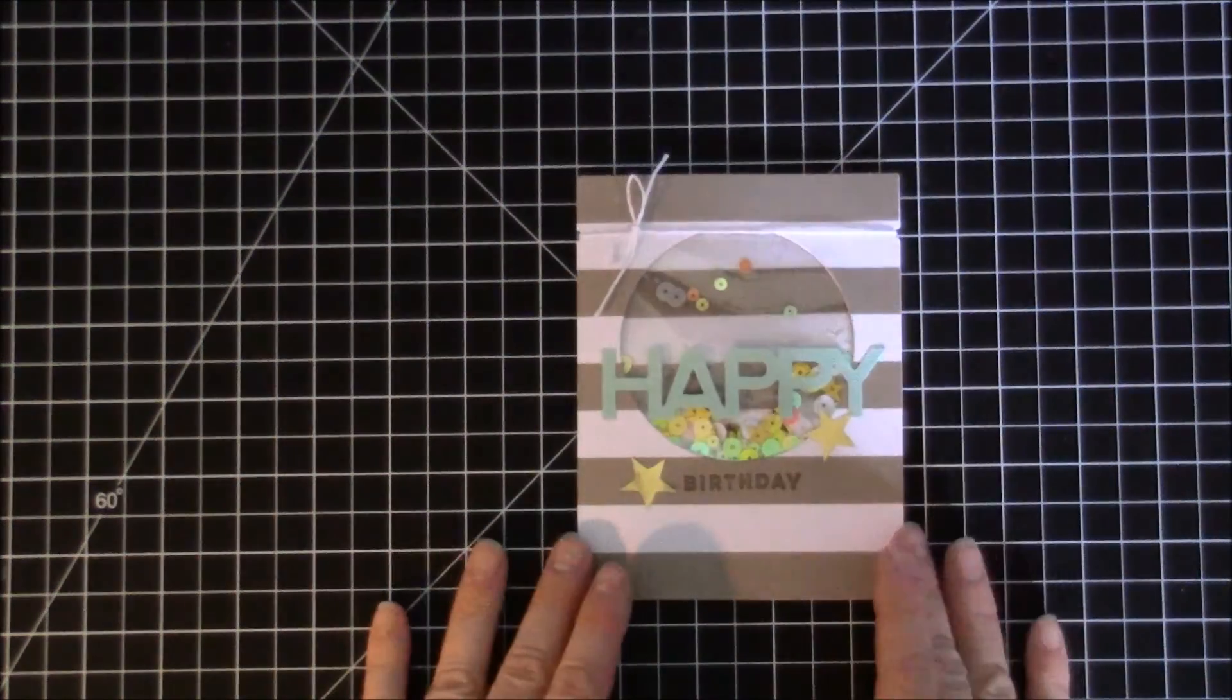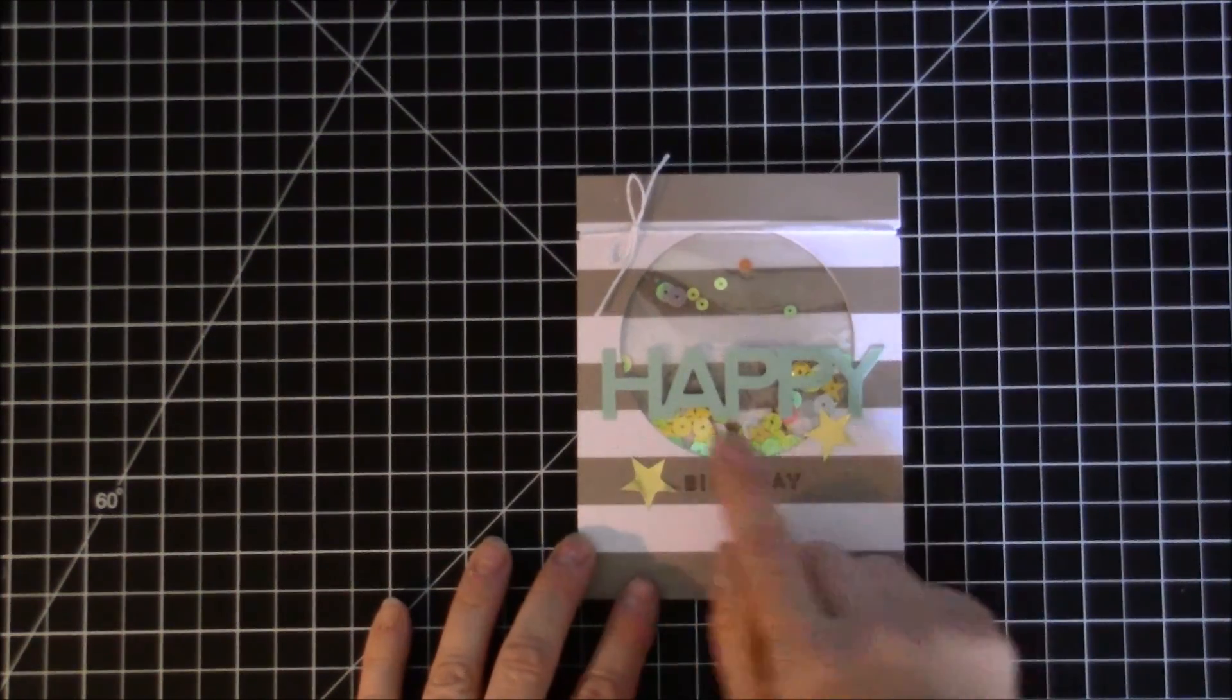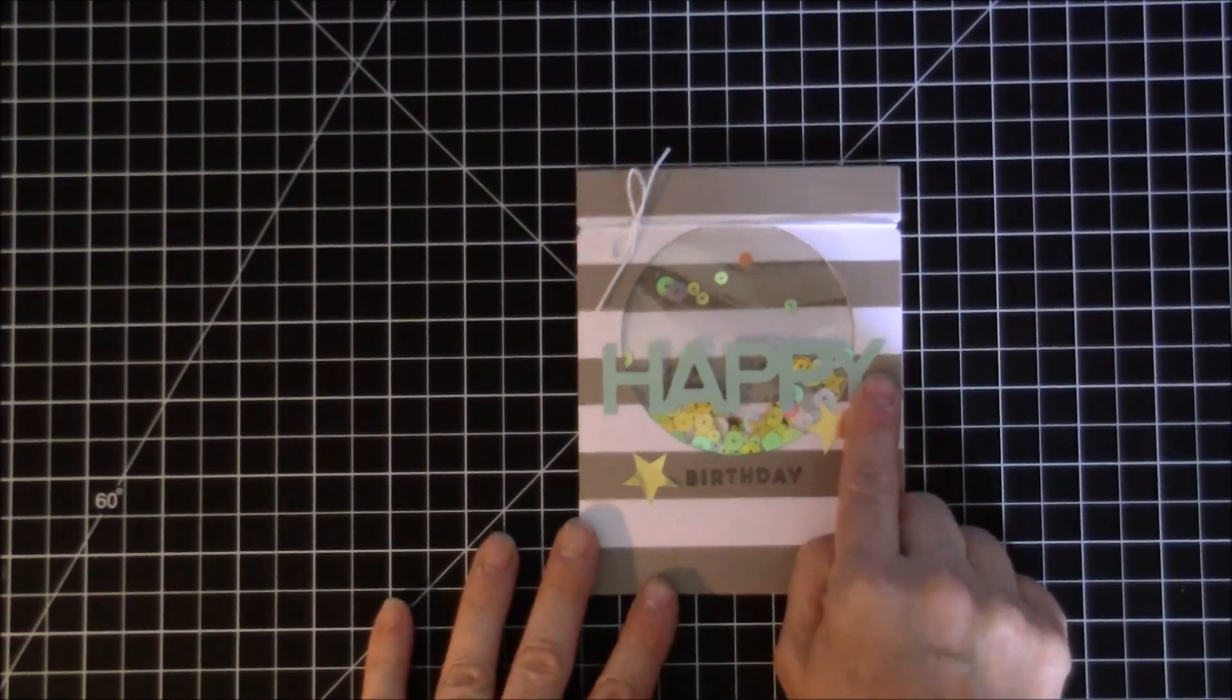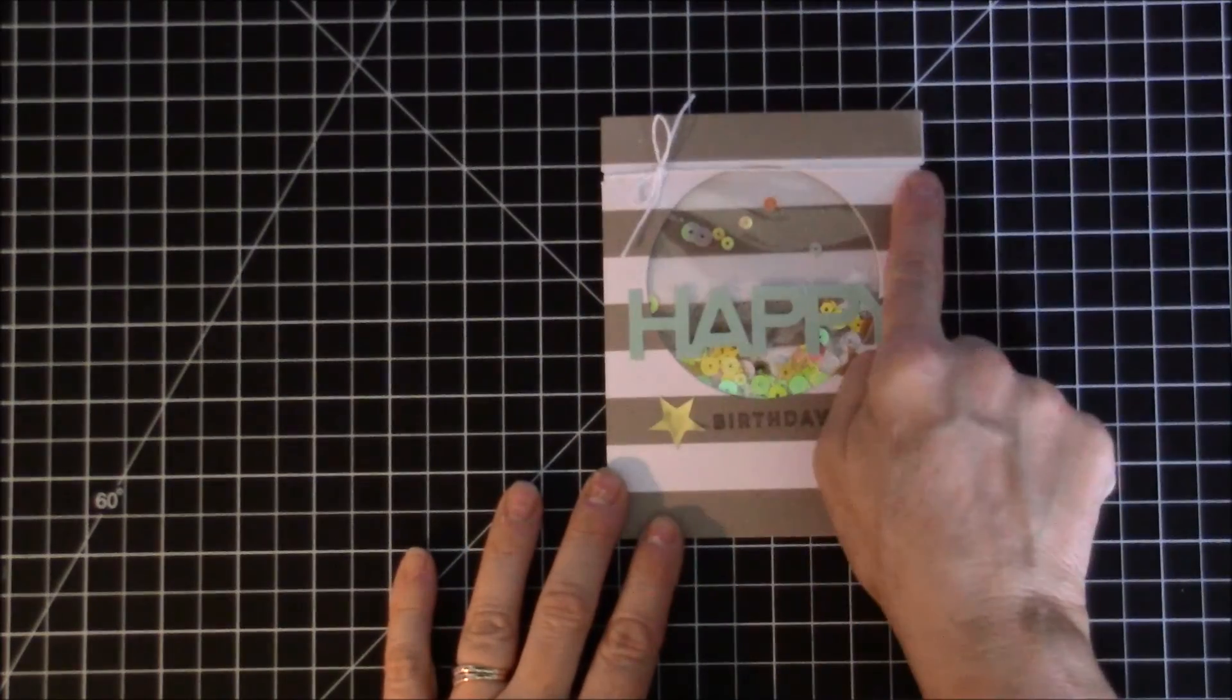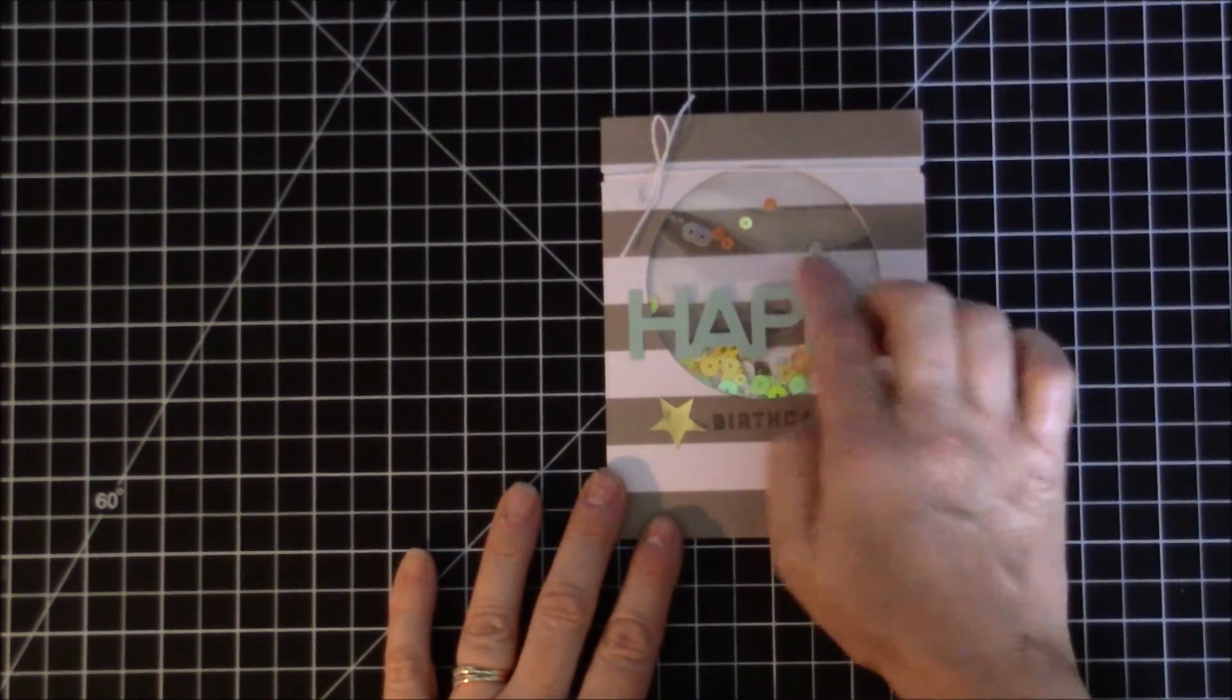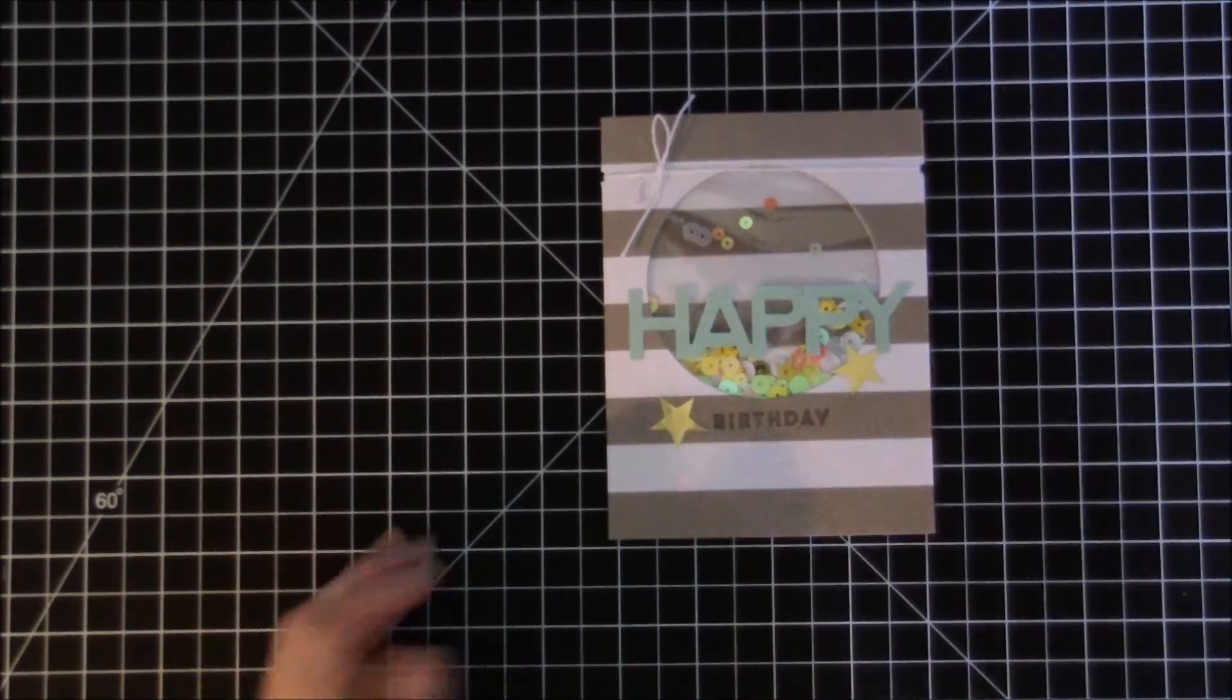Here's another shaker card that I made using a circle. I also used this from last month's kit and did the same thing with it.